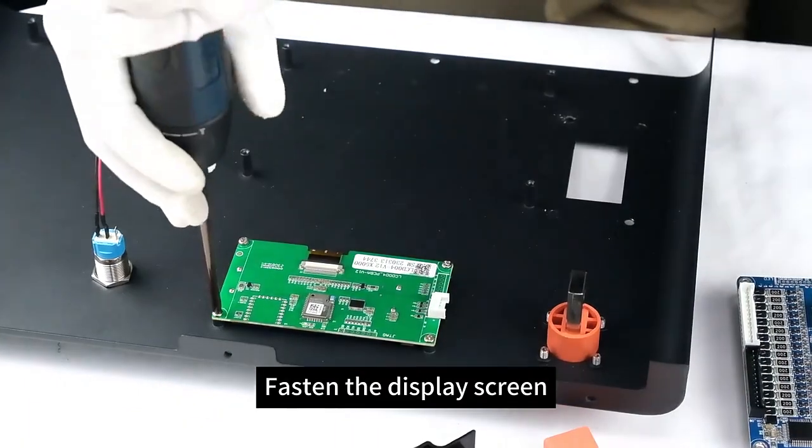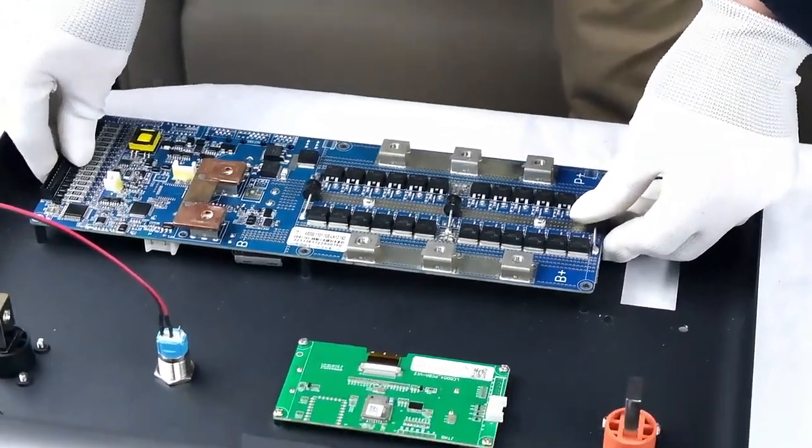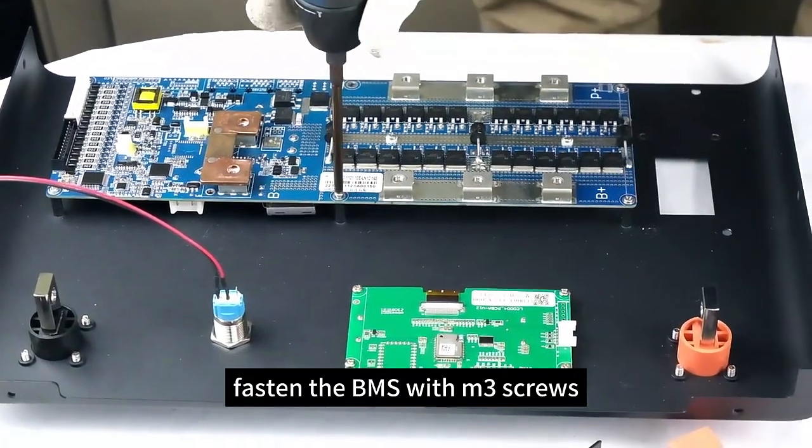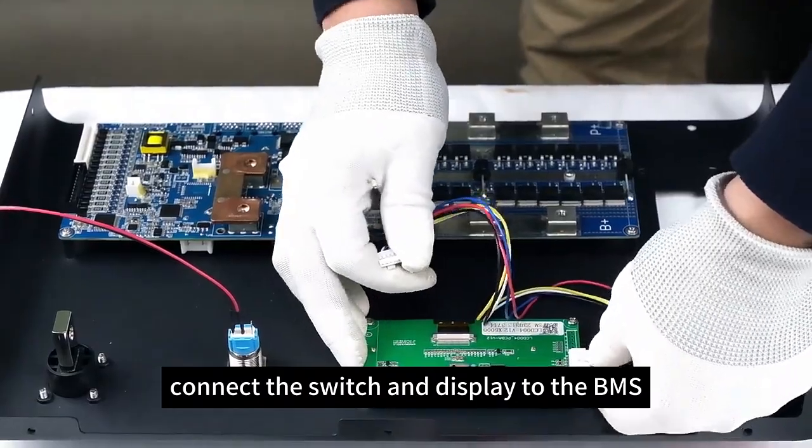Fasten the display screen. Make sure every button is clickable. Fasten the BMS with M3 screws. Connect the switch and display to the BMS.